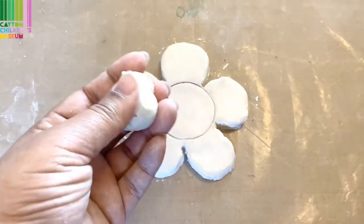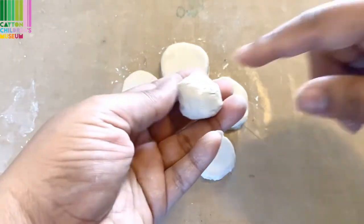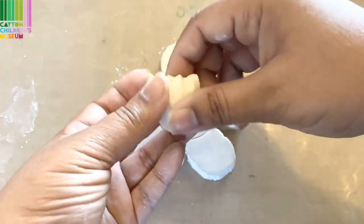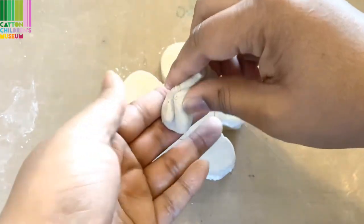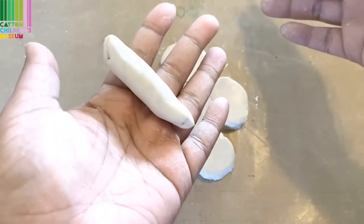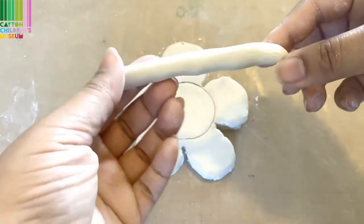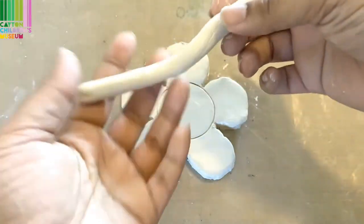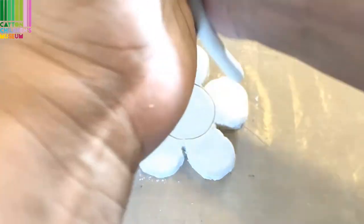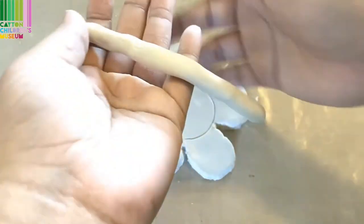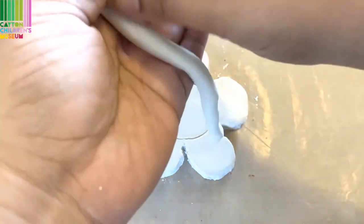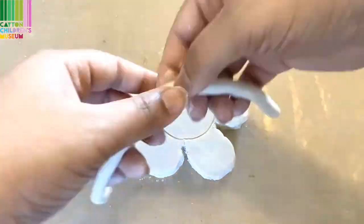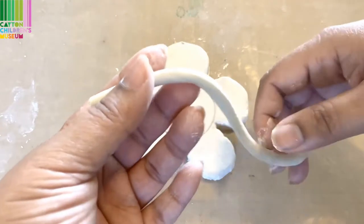And now I'm just going to take this. And it's a little dry. So I just stuck my finger in some water. And I'm just going to start to roll this into a snake shape. Until I've gotten it to the thickness that I want. I think I like the shape.